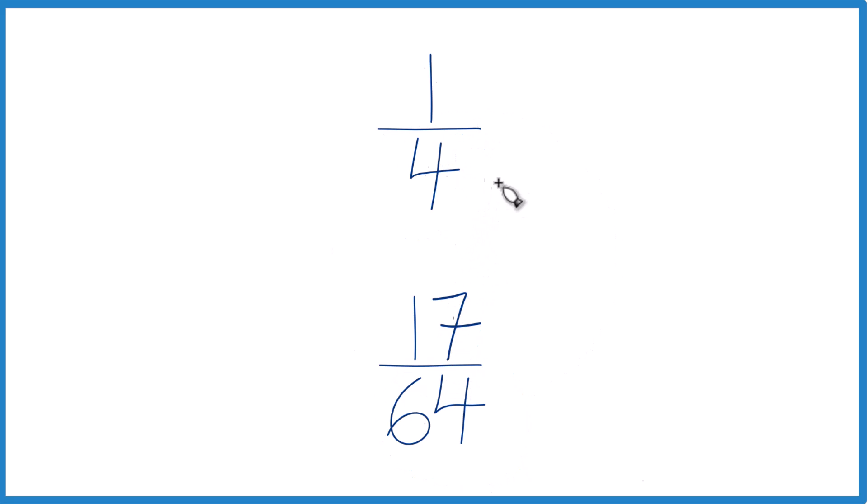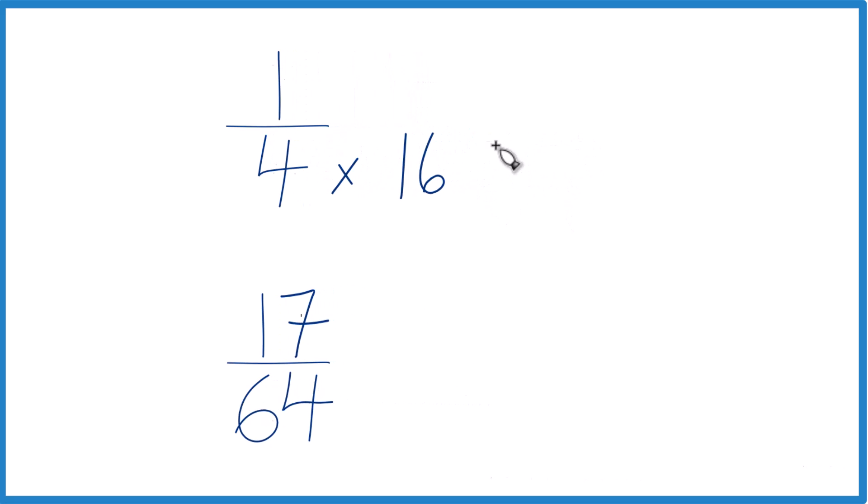So 4 goes into 64 16 times. 4 times 16, that is 64. And then down here we already have 64, so let's just call it 17/64. We won't change anything.